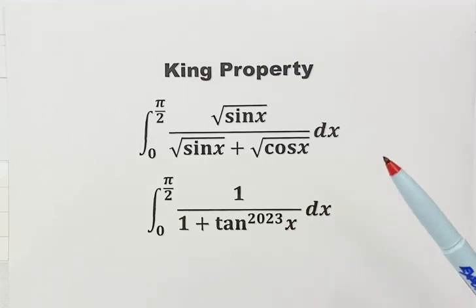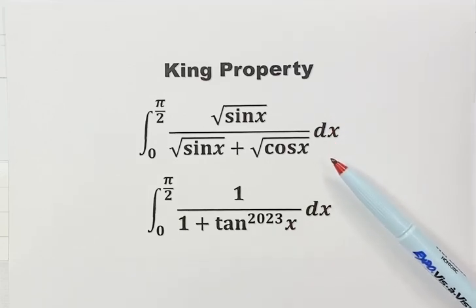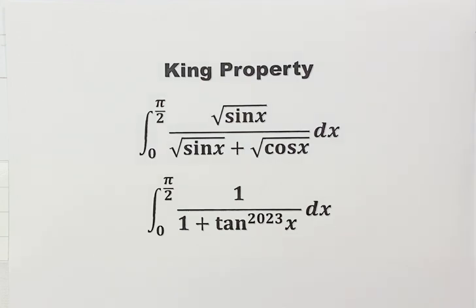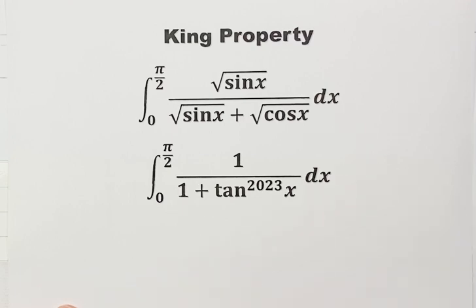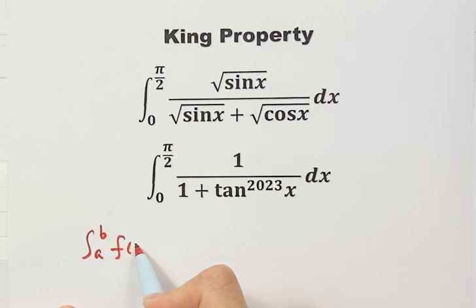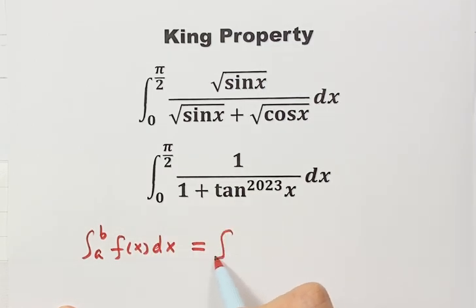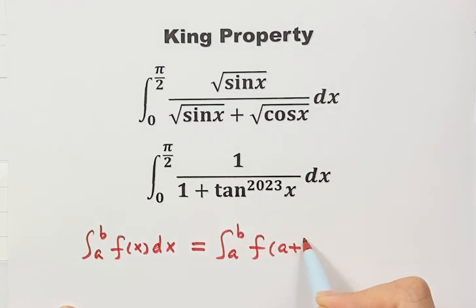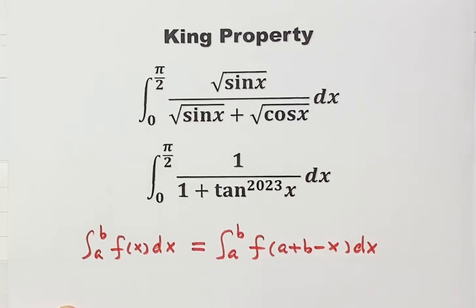In this video, we are going to use the King Property to evaluate these two integrals. They are from college math computation. The King Property states that the integral from a to b of f(x) dx equals the integral from a to b of f(a + b − x) dx. This is one of the techniques we use to evaluate integrals.